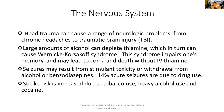We'll talk briefly about the nervous system and ways that substance use can affect it. Head trauma can cause a range of problems, from headaches to effects of TBI or traumatic brain injury. Large amounts of alcohol can deplete thiamine, which is why we want patients who are ongoing in their alcohol use to take thiamine. If severely depleted, this can cause Wernicke-Korsakoff syndrome, which may lead to coma and death without IV thiamine. Seizures can result both from stimulant toxicity or from withdrawal from alcohol or benzodiazepines — about 14% of acute seizures are due in some way to drug use. Stroke risk is also increased due to tobacco, heavy alcohol use, and cocaine.